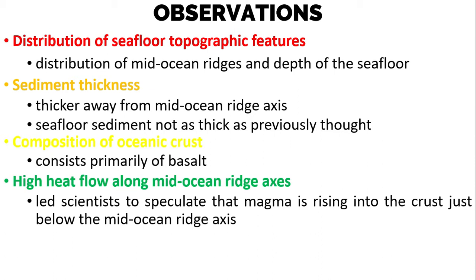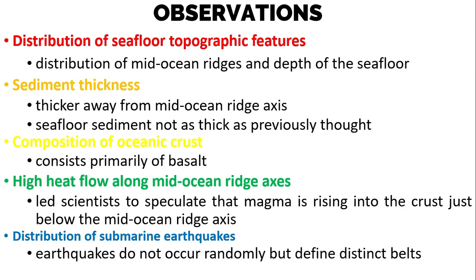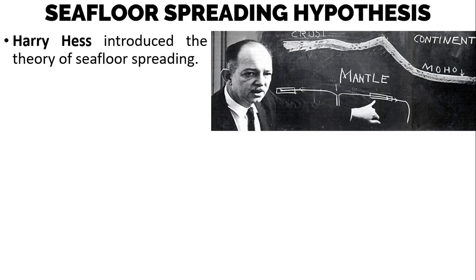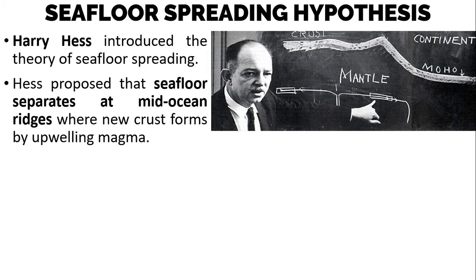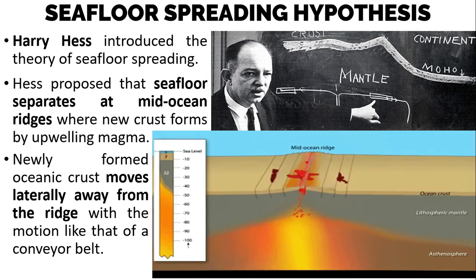We also have the distribution of submarine earthquakes. Earthquakes do not occur randomly but occur in defined, distinct belts. Earthquake belts follow trenches, mid-oceanic ridges, and transform faults. In 1960, Harry Hess introduced the theory of seafloor spreading. He proposed that the seafloor separates at mid-ocean ridges, where new crust forms by upwelling magma. Newly formed oceanic crust then moves laterally away from the ridge with a motion like that of a conveyor belt.